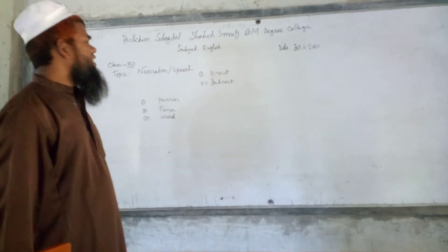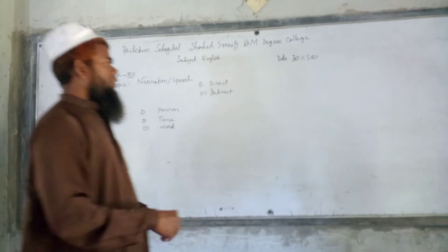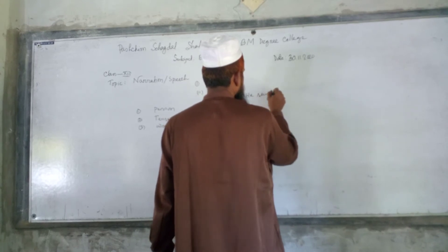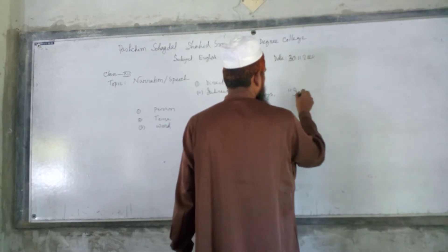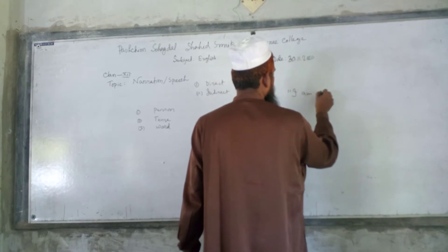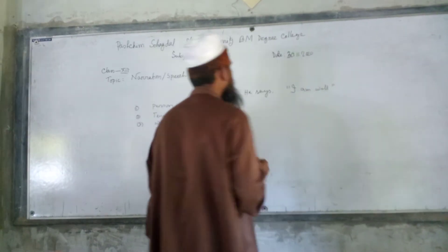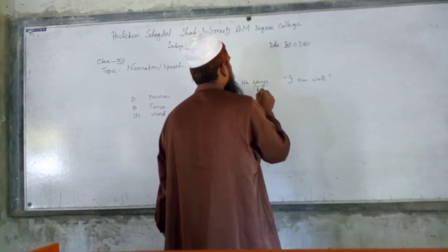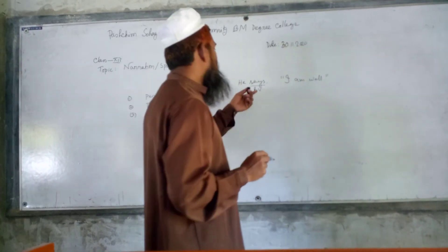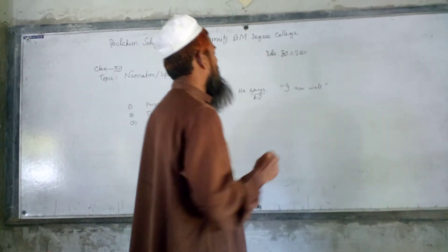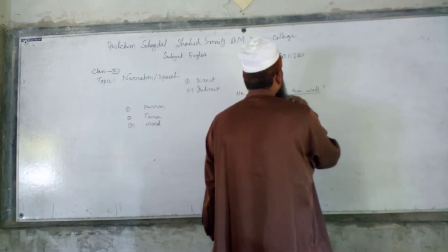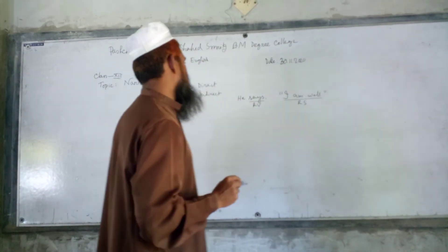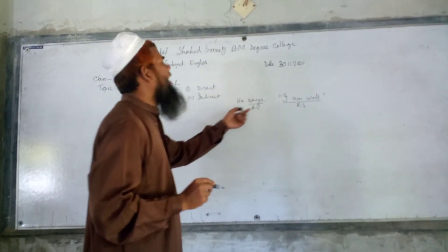I am discussing about person. For example: He says, 'I am well.' In this sentence, 'says' is the reporting verb — we can say RB in brief. And the part 'I am well' is the reported speech — we can say RS in brief. So we have the reporting verb and the reported speech.